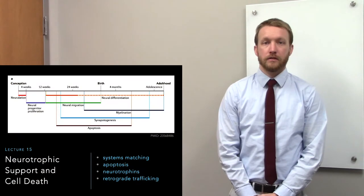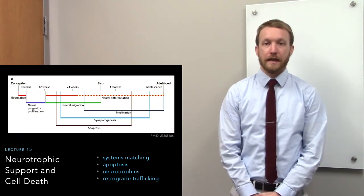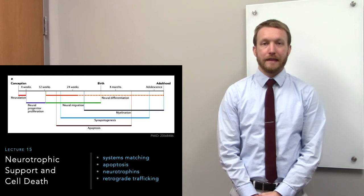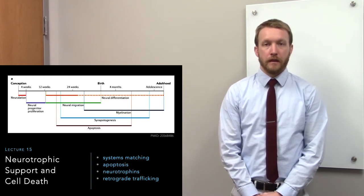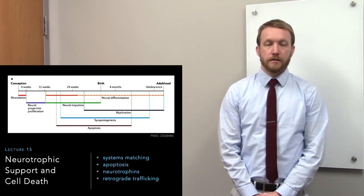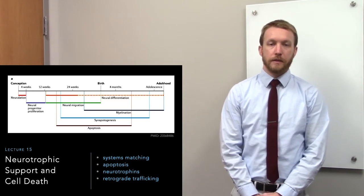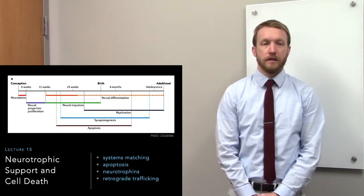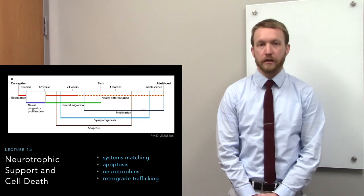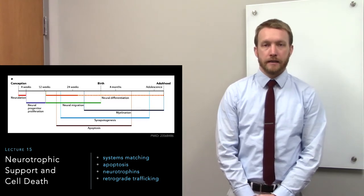In this last talk about development, we're going to cover death. This is kind of the last part of development. So we make a bunch of cells, turn them into different types of tissues, and then we trim the fat. That's what programmed cell death is — this is death by design.